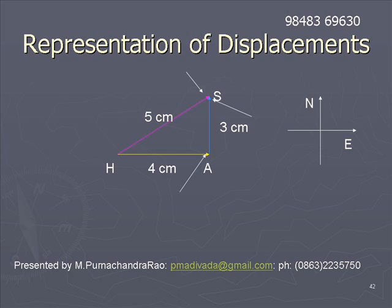In the first phase, H is the starting position and A is the final position. In the second phase, A is initial and S is final. For the overall journey, H is initial and S is final. Like this, we represent displacements on paper using vectors with a suitable scale. Not only displacements — we can represent any vector physical quantity on paper using vectors.